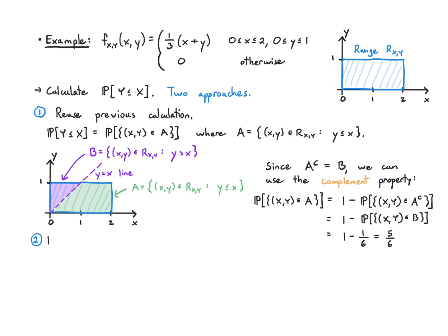What if we didn't have that available to us? Another way we could have done it is by direct integration. I'm asking Y≤X, that means integrate over this region A the joint PDF. I'm going to write down the joint PDF values: one-third (x+y) dx dy. I start from this line and go to 2. The line starts when x equals y and then goes until it hits 2. The other line just goes from 0 to 1.